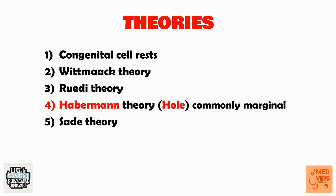Habermann theory states that in the case of a pre-existing perforation in the tympanic membrane, the epithelium from the external auditory canal or the outer lining of the tympanic membrane invades the perforation and forms cholesteatoma. A mnemonic: Habermann starts with H, and the perforation is a hole — also H. So in Habermann theory, epithelium invades through a hole in the tympanic membrane. This is commonly seen in marginal perforation of the tympanic membrane.